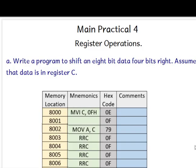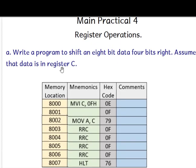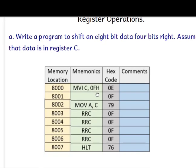Hello everyone, welcome to the 8085 microprocessor practical series. Today we will be doing register operations. The first program is: write a program to shift an 8-bit data 4 bits towards the right. Assume the data is in register C.